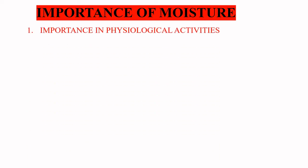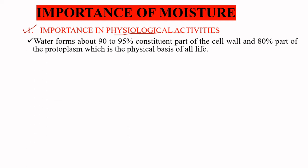This can be studied under, first of all, the importance in physiological activities. Physiological activities are all the physiological processes — that is photosynthesis, respiration, transpiration, etc. — which take place inside the plant body. Water forms about 90 to 95% constituent part of the cell wall, and 80% part of the protoplasm, which is the physical basis of life.